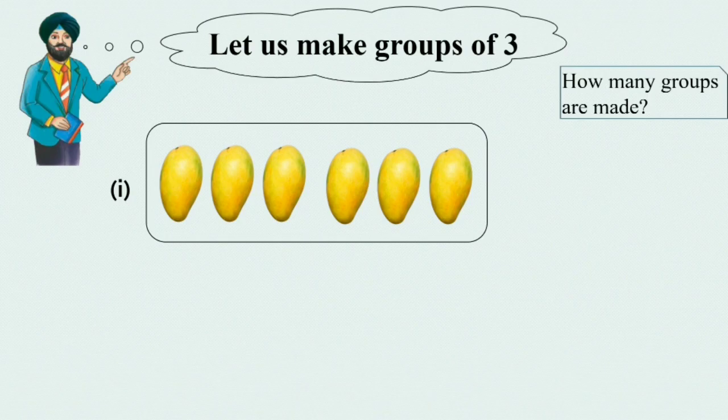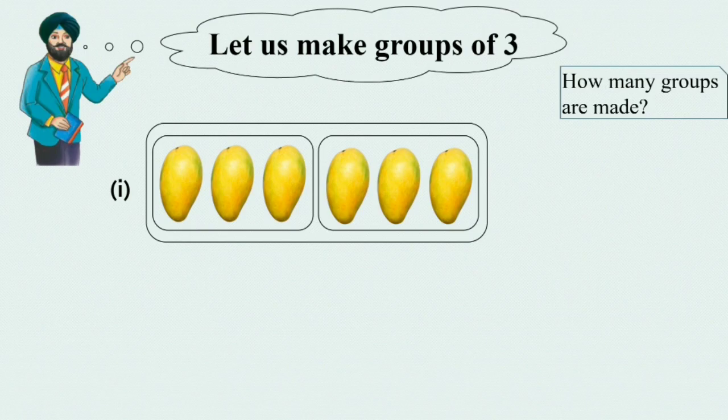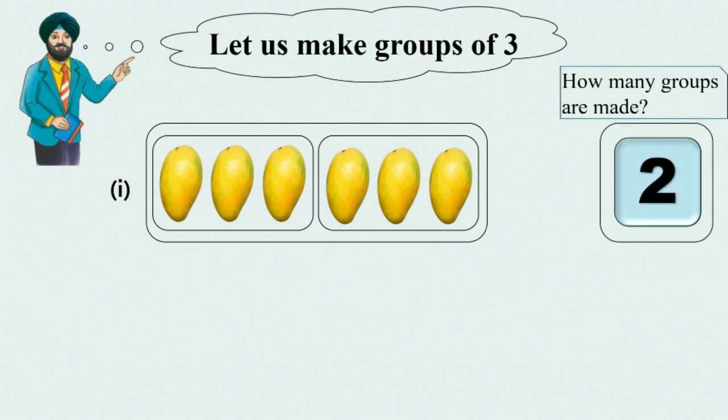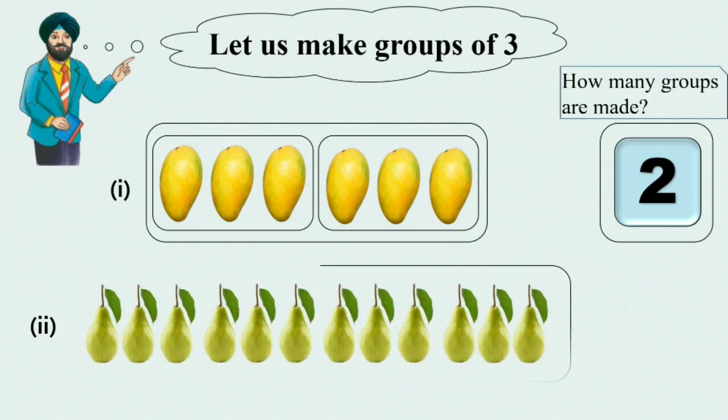Here we make 1 group of 3. Yes, this is 1 group of 3. Now we have some mangoes left out of this group. We can make another group. Here is the second group of 3 mangoes. So how many groups do we have here? Yes, we have 2 groups of mangoes. Write 2 in the given box.